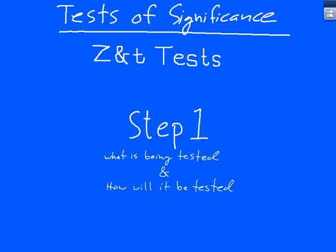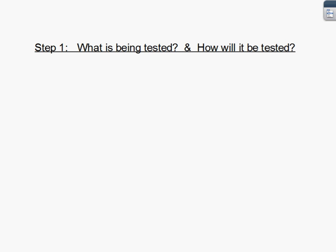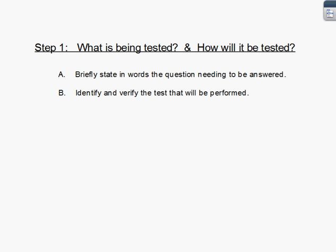Now we're going to start the full procedure for doing a ZNT test. There are four steps, and we're going to talk about just the first one in this video. We're talking about what's being tested and how it will be tested. You want to briefly state in words a question needing to be answered and identify and verify the test that would be performed.